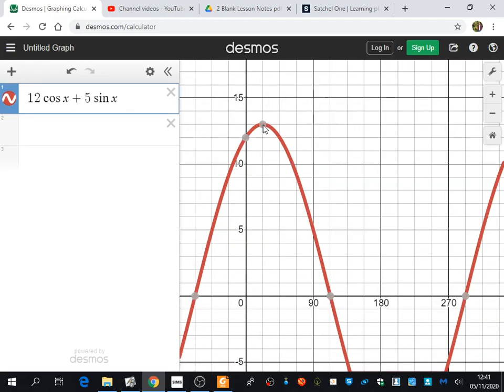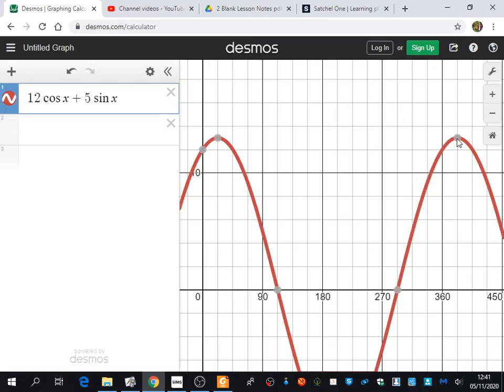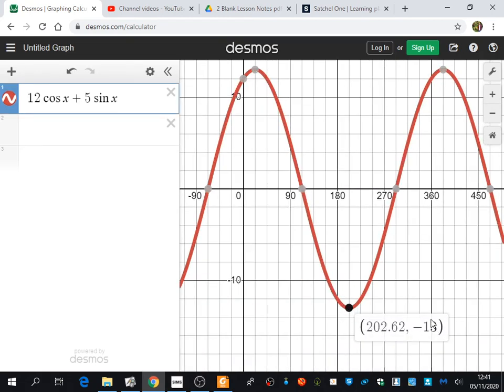So here is the graph that they were asking us to say, what is the maximum value of it? Well, you can see here the maximum value is at 13. And that occurs when the smallest positive value of x is 22.6. The next value is here, which we said was 382.62. And the minimum value, unsurprisingly, is all the way down here at minus 13 as well.